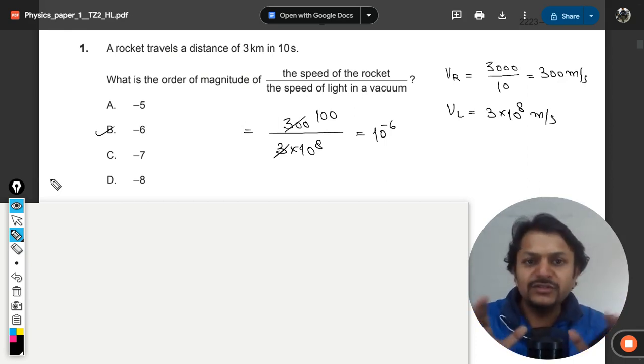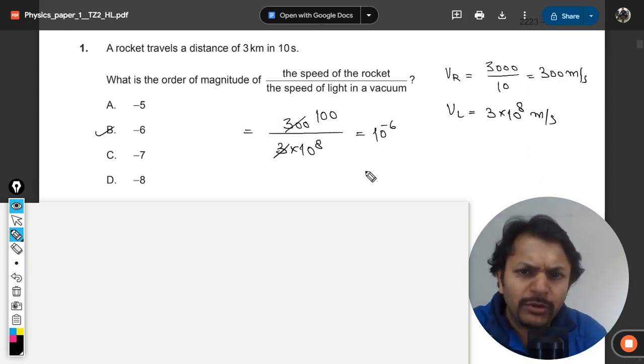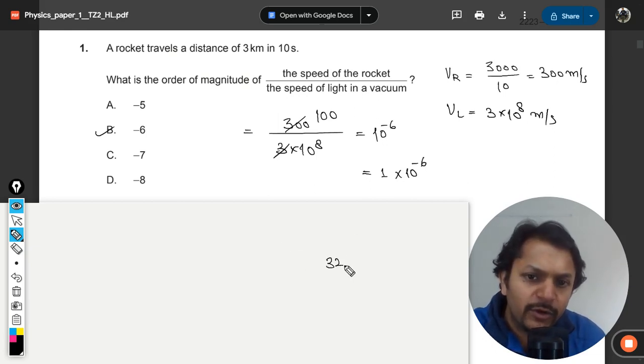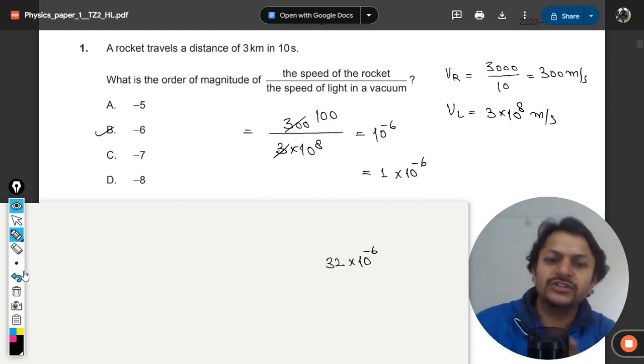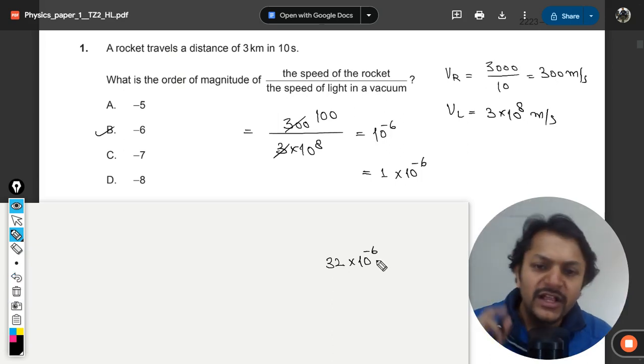But there is one piece of additional information that I can give you here. If in some cases, let's say there is no problem here - this can be written as 1 into 10 per negative 6 - but let us say that you were getting something like 30 times 10 raised to power negative 6 ratio. So if this was the case, the order will not be taken as 10 raised to power negative 6.